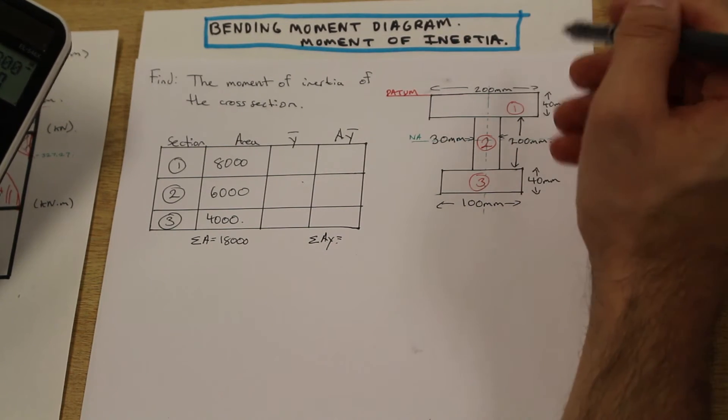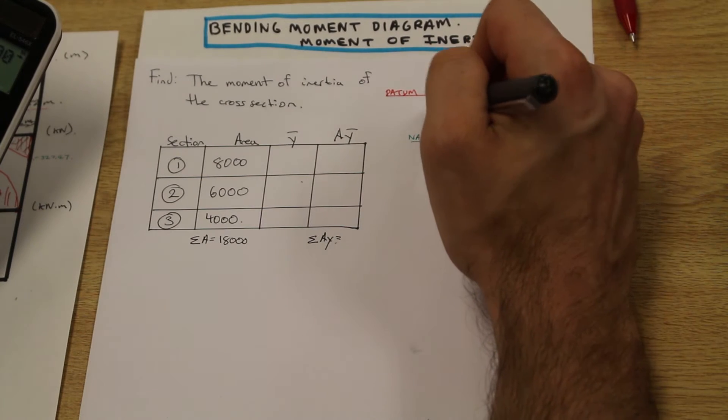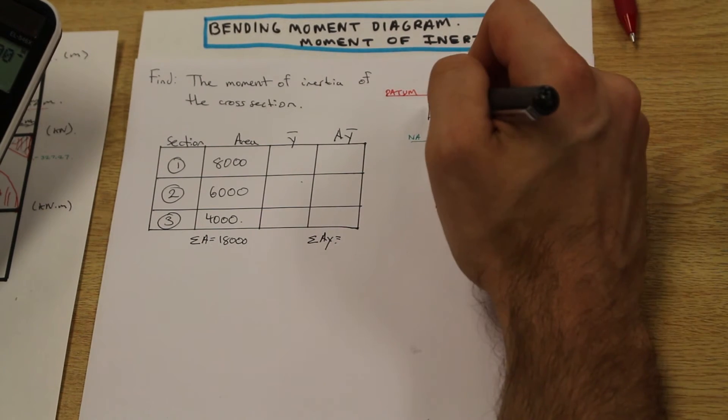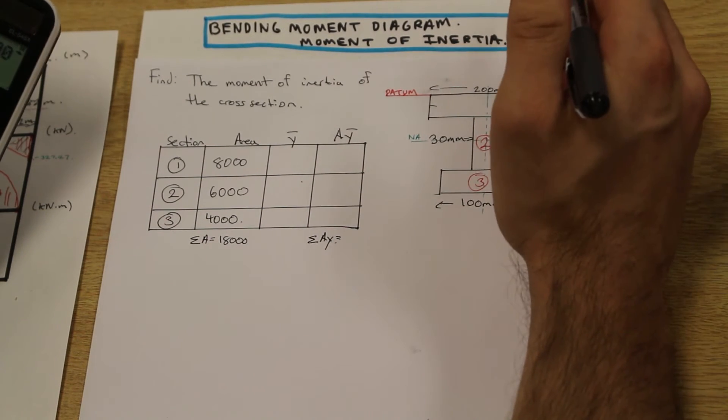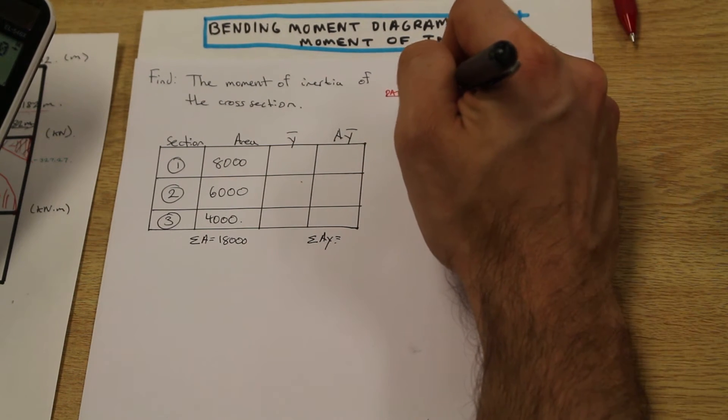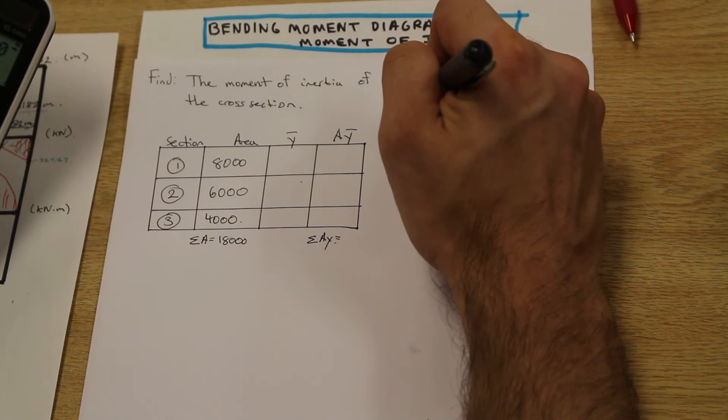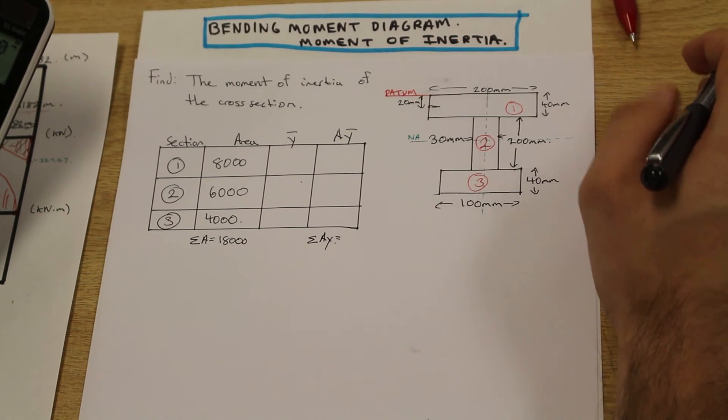For section 1, the centroid of the shape with regards to Y bar is going to be 20, right? Because the distance of a rectangle, or the centroid of a rectangle, is the halfway point. We all know that. The distance from that halfway point, or the centroid of that shape to the datum, is going to be 20 millimeters, and that's what we're going to use.